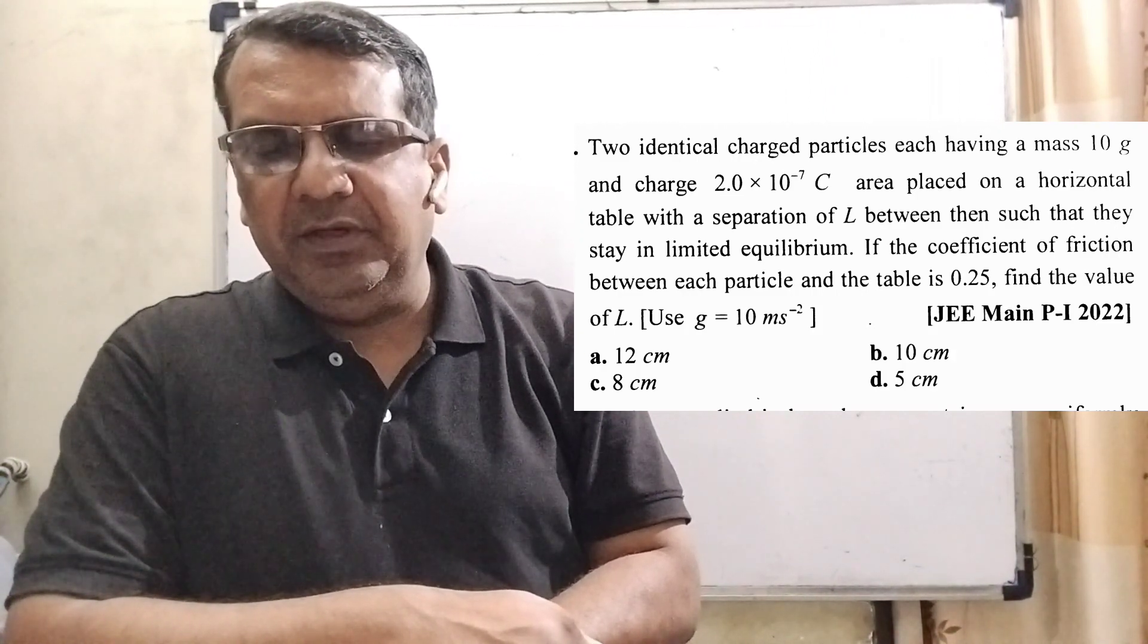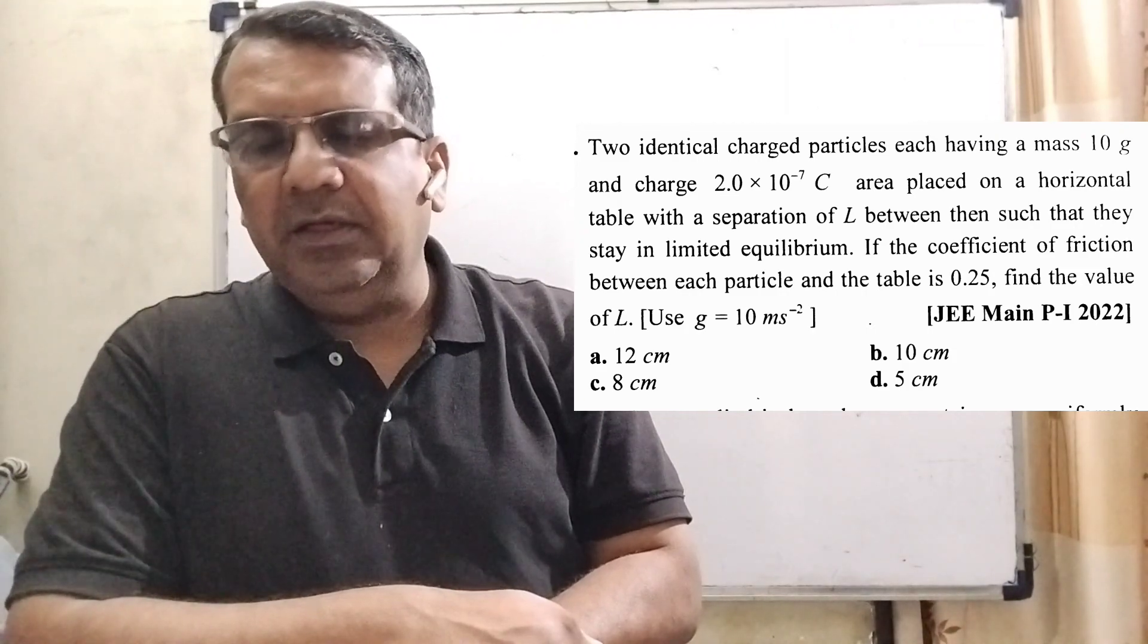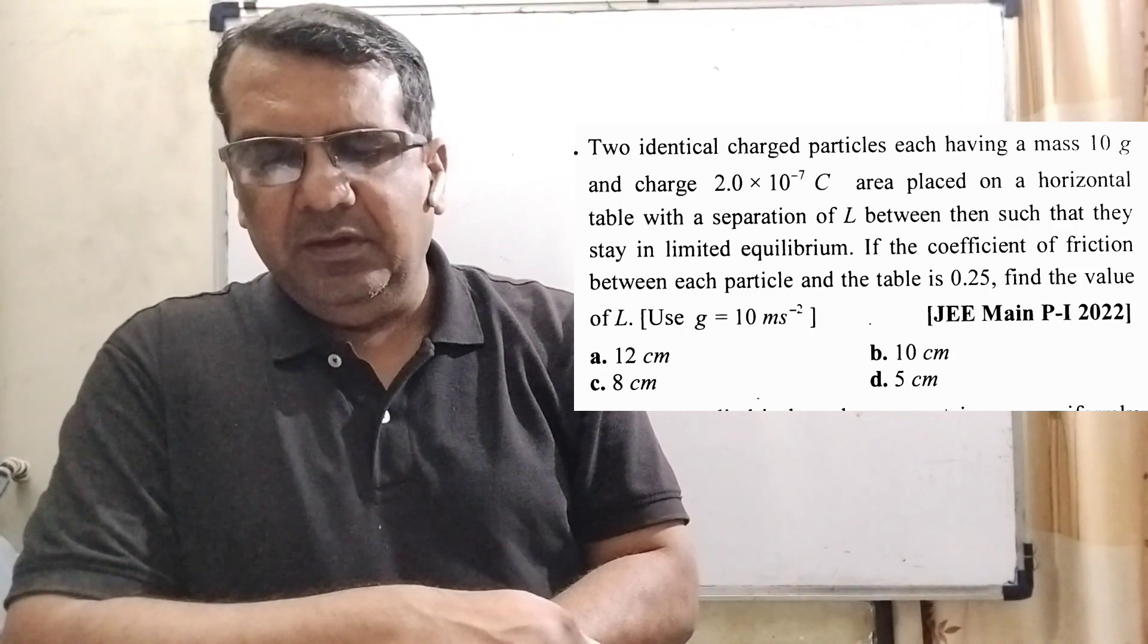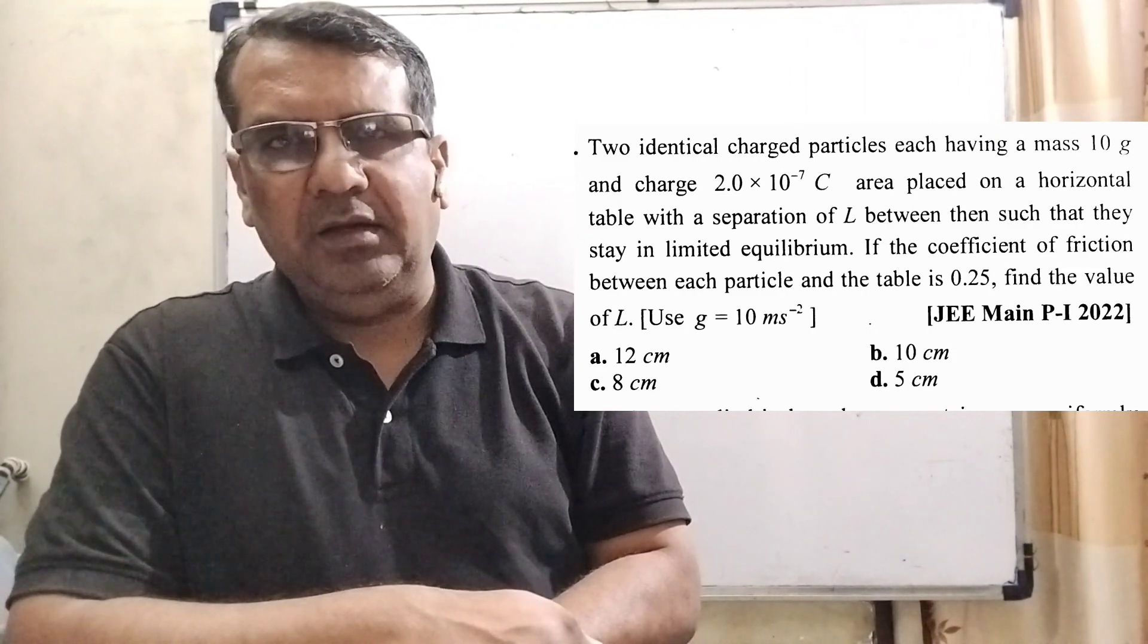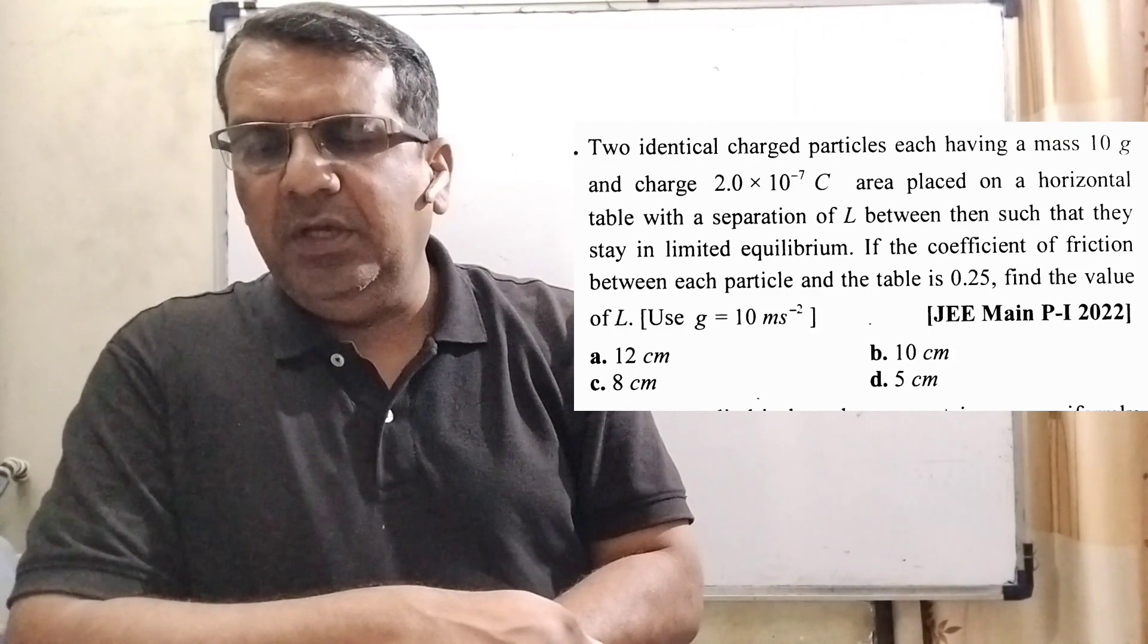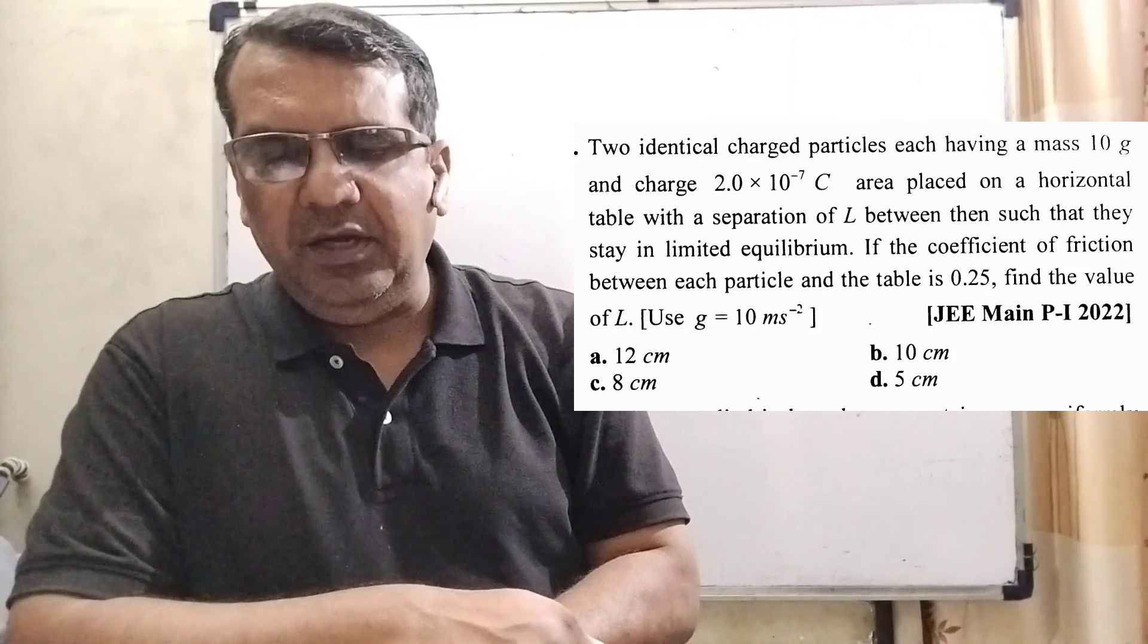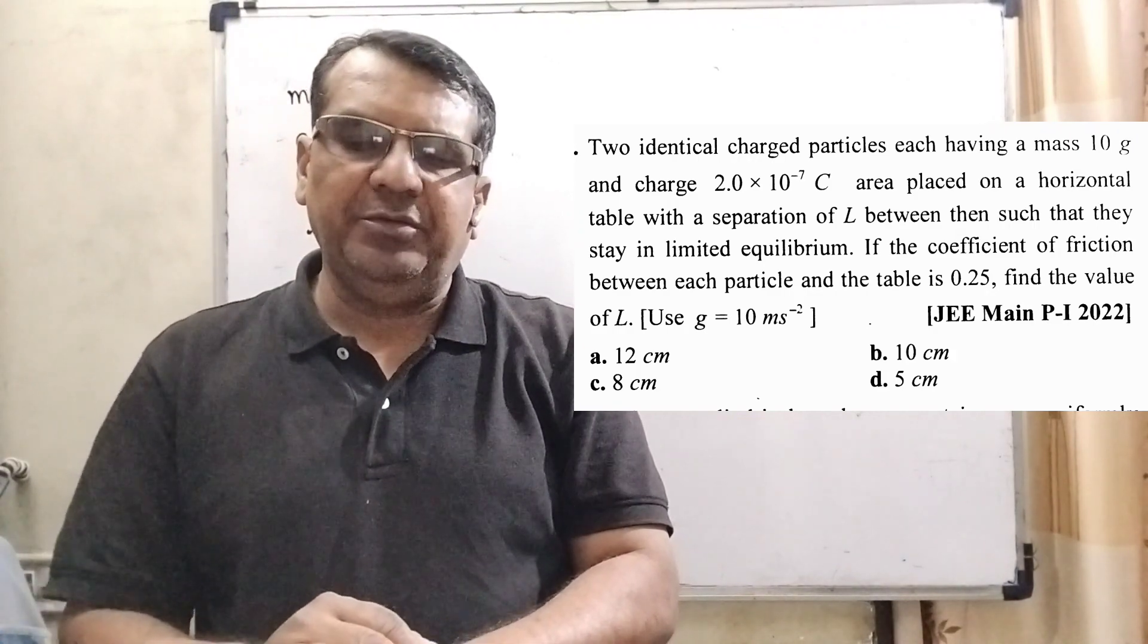If the coefficient of friction between each particle and the table is 0.25, find the value of L. Here, use g = 10 m/s². And here we have given four options.